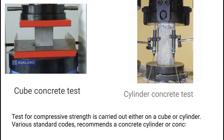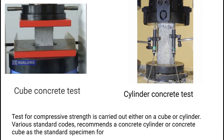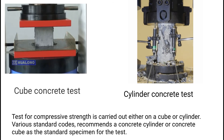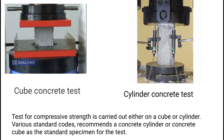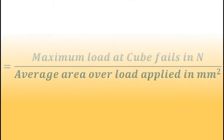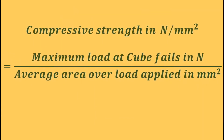Test for compressive strength is carried out either on a cube or cylinder. Various standard codes recommend a concrete cylinder or concrete cube as the standard specimen for the test. Compressive strength formula equals the load applied divided by the area of the specimen.